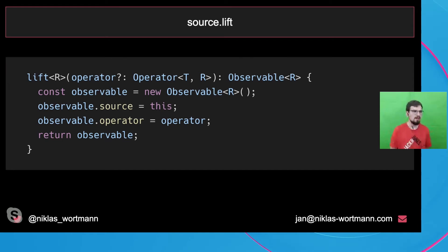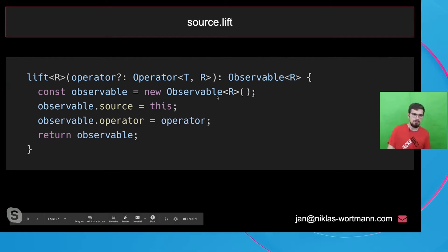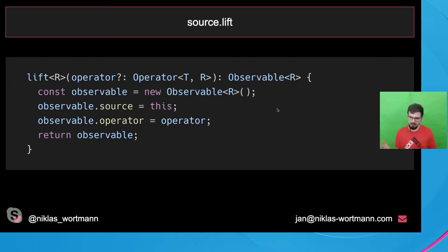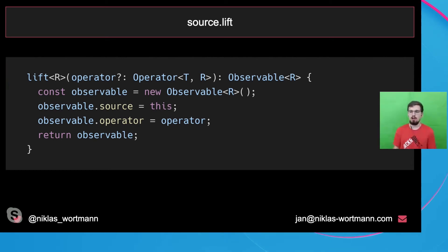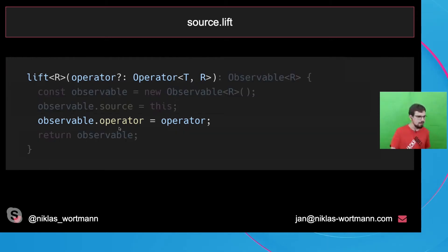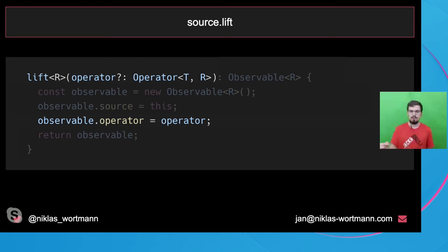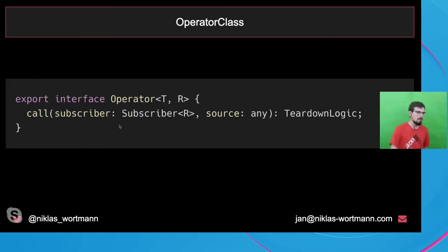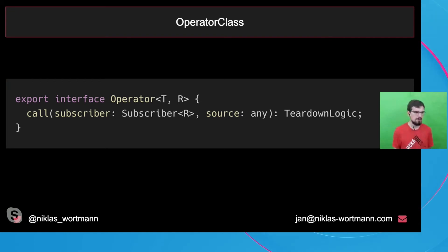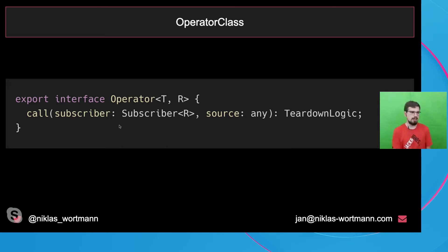Here's the most important part of the map operator implementation from RxJS. It takes the projection function, the source function returns another observable, and we return source.lift where we pass a new map operator. Looking at the observable class, the lift method creates a new observable — confirming that every operator returns a new observable — and sets two metadata attributes: source and operator. This comes into play when we talk about how operators are called lazily.